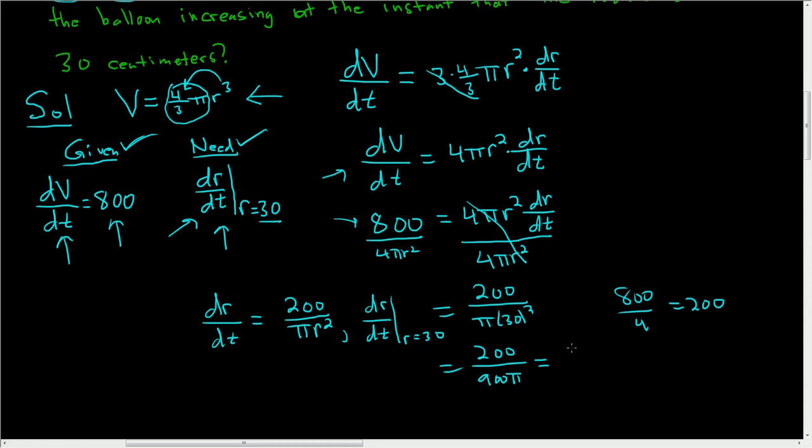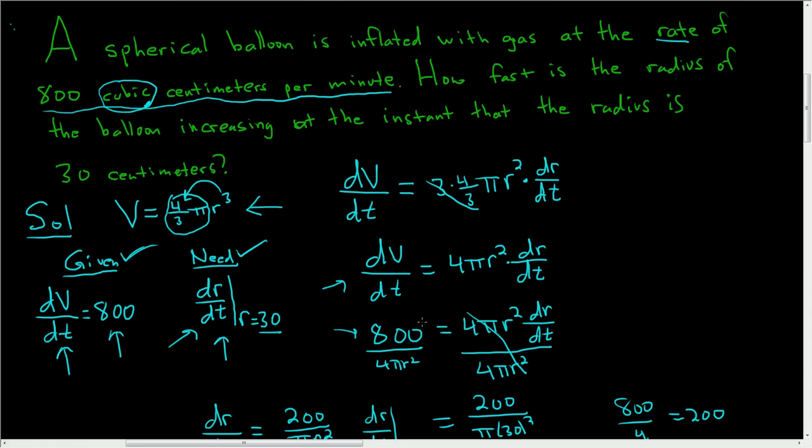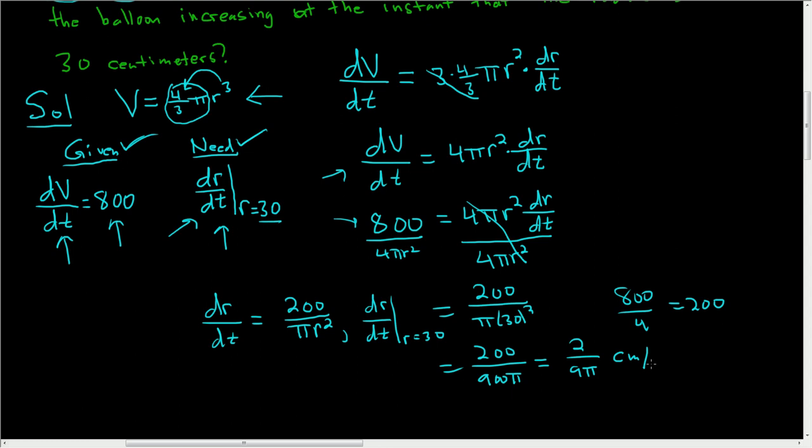So you end up getting, let's see, divided by 100, so you get 2 over 9 pi, and this is the rate of change of the radius. The units in this problem were centimeters, so it's centimeters per, and I believe the time was minutes. Yep, it sure was, it's minutes. So per minute. And that's the answer. Not a super tough problem, just write down what you're given, write down what you need, and you got this. That's it.